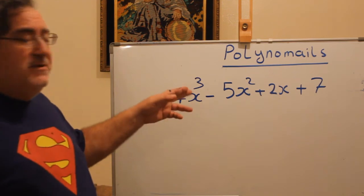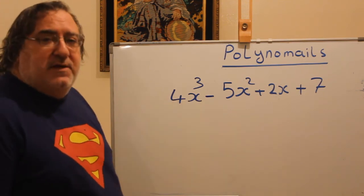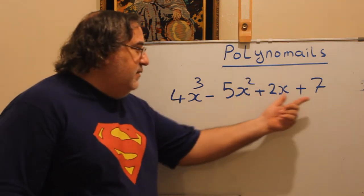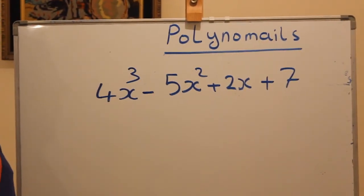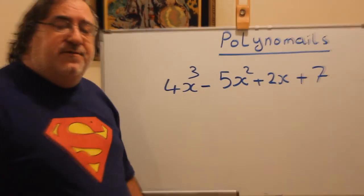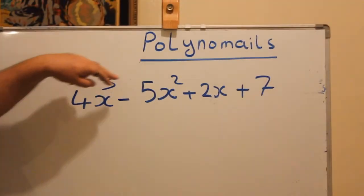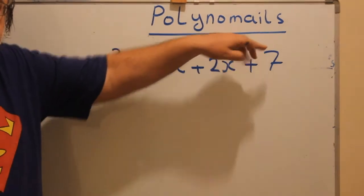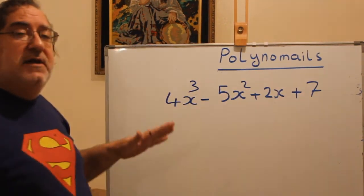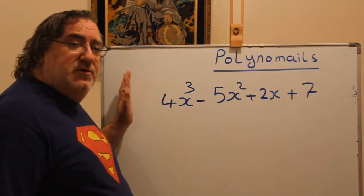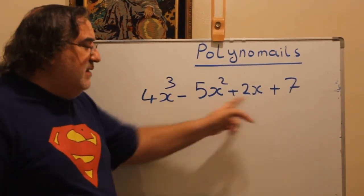Hi again. Suppose a polynomial is given and you are asked what is the name. Just count the terms: 1, 2, 3, 4 — because it's made of 4 terms. Now, if asked for the degree — be careful. This is called standard form because the powers are in descending order: 3, 2, 1, then constant. If it is not organized, you must arrange it in descending order first. Since this is already organized and all the same variable, the degree is 3.